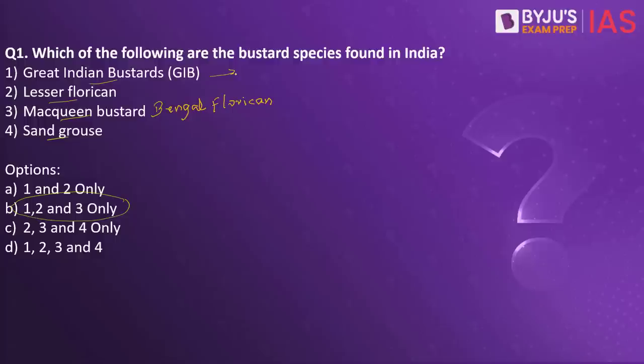Remember, they feed on insects, lizards, grass, seeds, and so forth. The Great Indian Bustard is also considered the flagship bird species of the grassland, and hence it is considered as the barometer of the health of the grassland ecosystems.